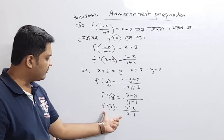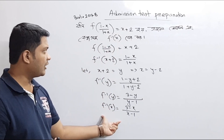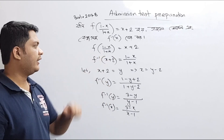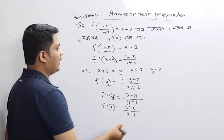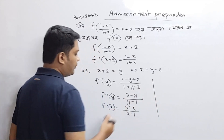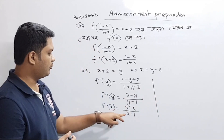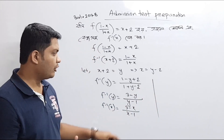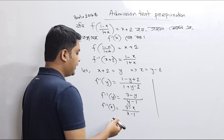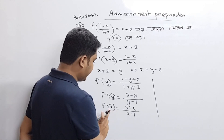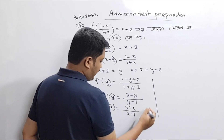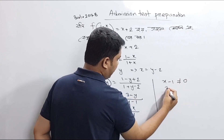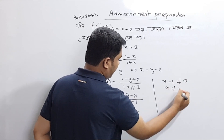Now I am going to discuss the inverse function domain. We cannot have x minus 1 equal to 0, so x is not equal to 1. Therefore the inverse function domain is all real numbers except x equals 1.